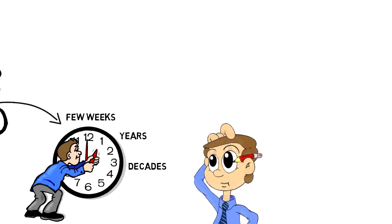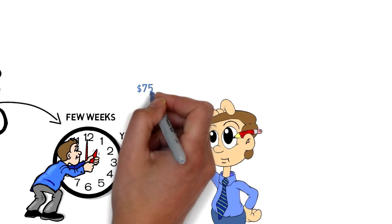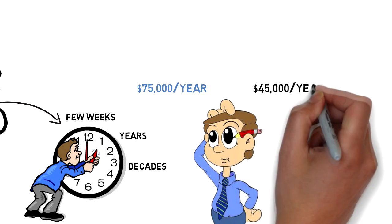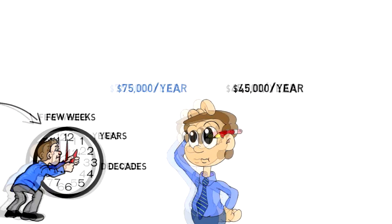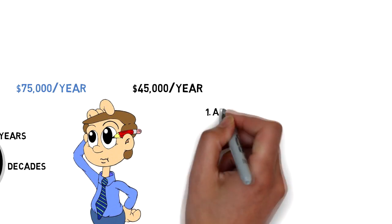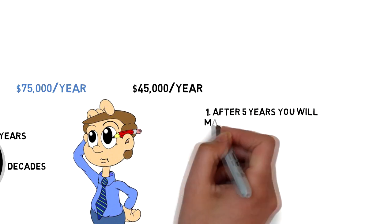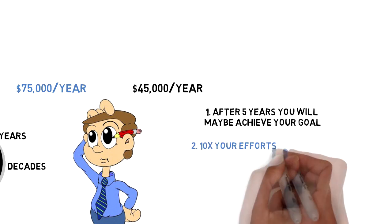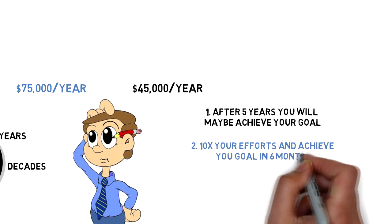So if you want to earn a certain salary, let's say $75,000 a year and you're currently on $45,000 a year, then you have two options. One, you can let life move on in its own pace and after five years you'll maybe achieve your goal. Two, you can 10x your efforts and achieve your goal in the next six months.